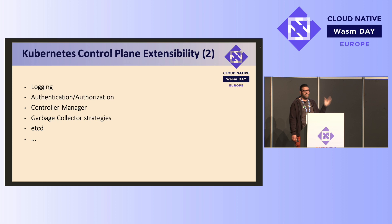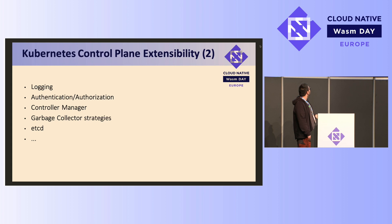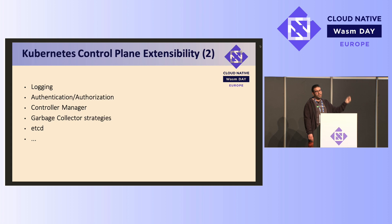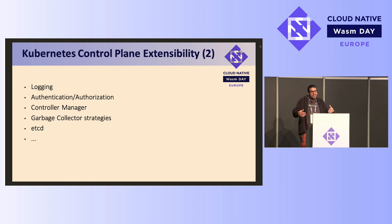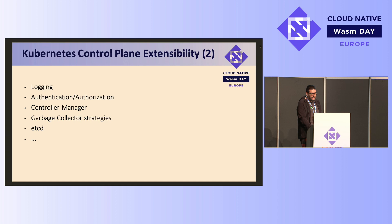Authentication or authorization? You already have the authenticating proxy. Controller manager? It's just a controller. Garbage collector strategies? You can use finalizers for that. Maybe something fancy with the CRI, but in the end it's just gRPC — you can put something in front of it or implement the gRPC protocol differently. So the control plane doesn't offer that much opportunity for WebAssembly right now, thinking out of the top of our heads. So we looked at the data plane.